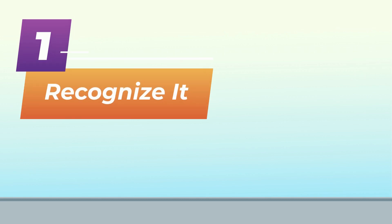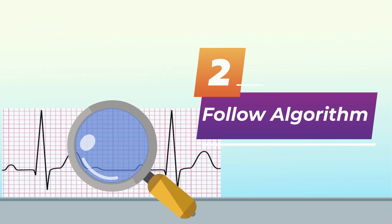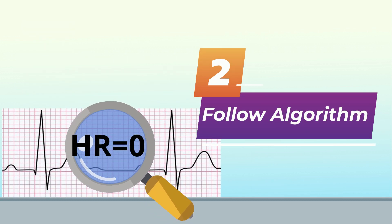So what's a neonatal team to do with PEA? One — recognize it. You have a heart rate tracing and number on the ECG strip, but no pulse ox reading and no audible heartbeats. If you bothered to check, there would be no pulses either. Two — follow the algorithm. The heart rate is zero. We can't skip over the importance of ventilation in our neonates, so establish effective ventilation as quickly as possible. Ignore the number on the ECG monitor and recognize that with no pulse, that number is actually zero.